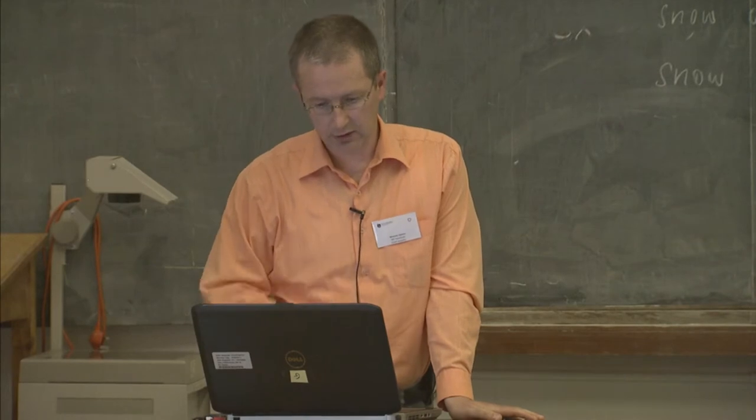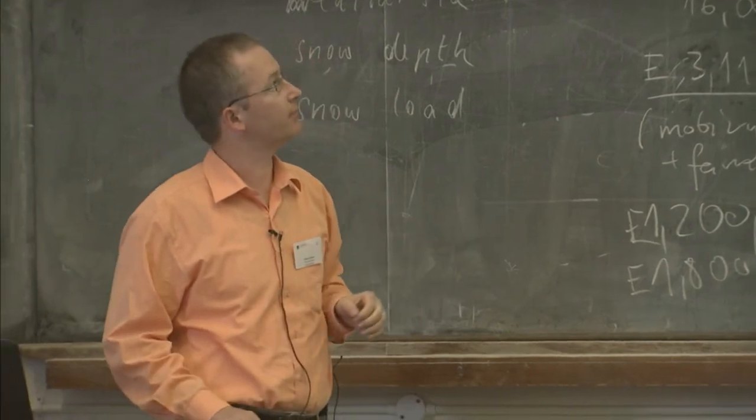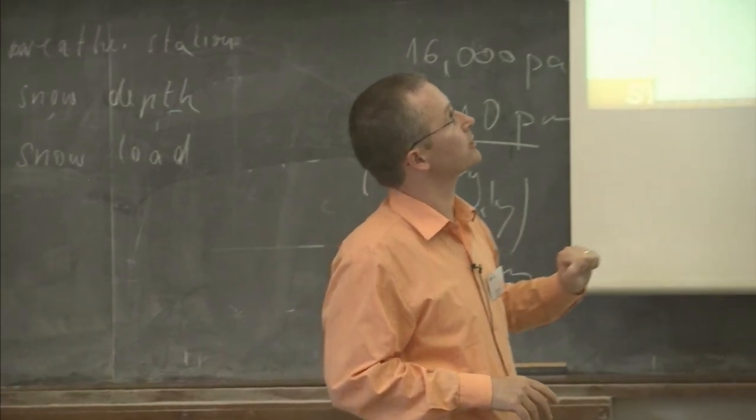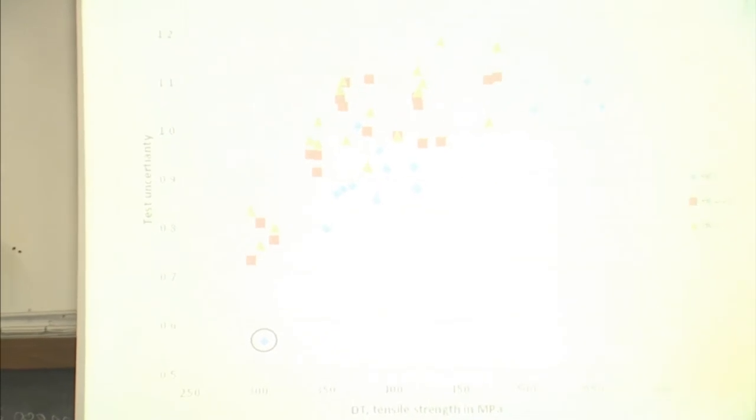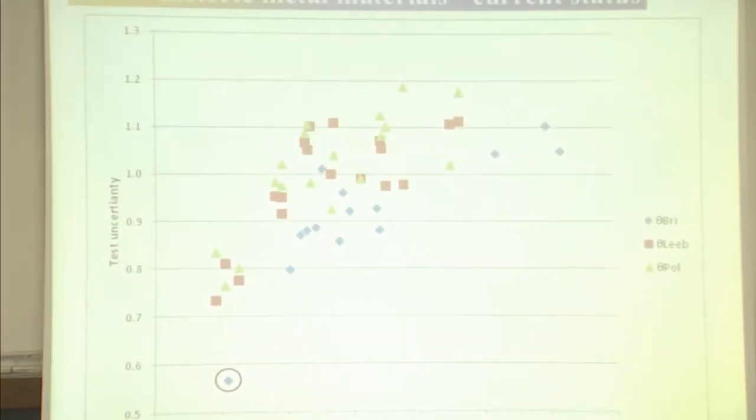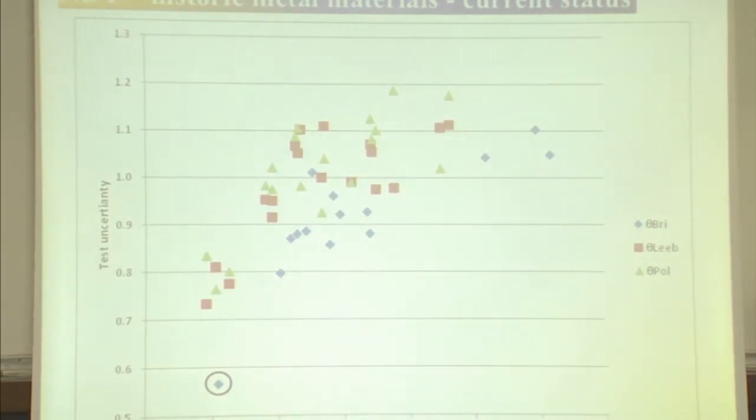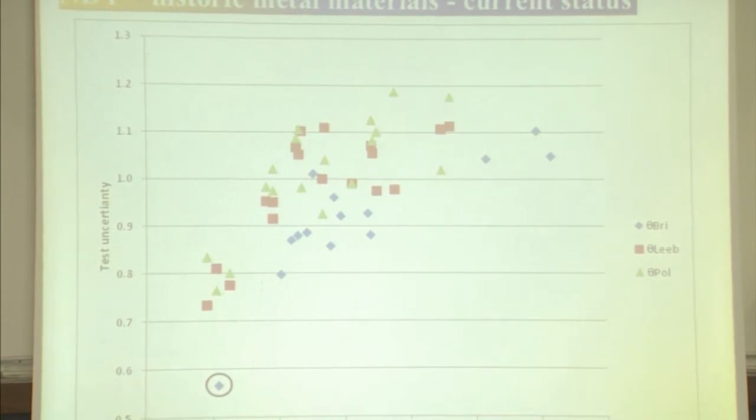For historic steel structures, if this proposal is also found interesting for the action, we have a similar but much smaller database. On horizontal axis in this graph we have destructive test result and tensile strength of material. We have test uncertainty on vertical axis. Here we have a comparison of three non-destructive test hardness methods: basically Brinnell, Leb, and Pauldi-Hammer.